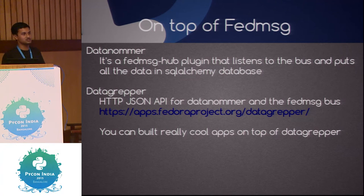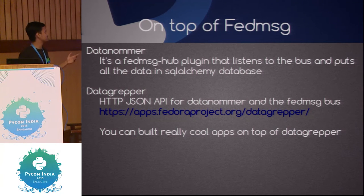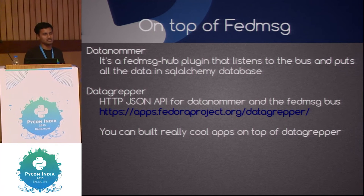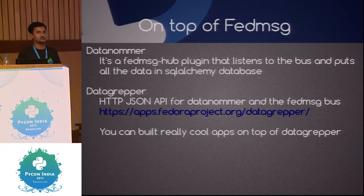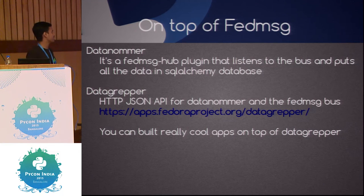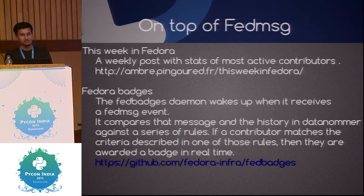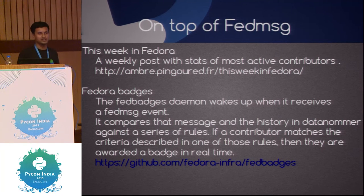There's a project called DataNorma which stores all messages into a database. There's a daemon called FedMessageHub that consumes those messages and stores them in the database. Using that database we built a REST API — if you want to get all data that happened previously, you can hit the API endpoints and get old historical data. The project that provides the JSON API is DataGrepper. Then we have This Week in Fedora, which gives the list of all activities happening in Fedora — what comments were made, how active contributors are, how active ambassadors are.